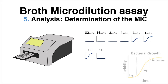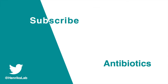In this case, the lowest concentration that is capable of stopping bacterial growth would be at 4 microgram per ml. This is the MIC. How do antibiotics work and why is antibiotic resistance such a challenge for us?